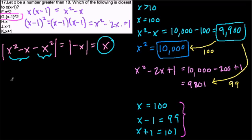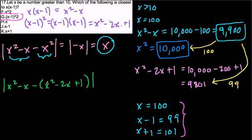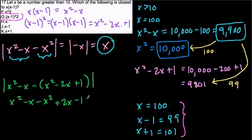What about G? We take the original, x squared minus x, and subtract x squared minus 2x plus 1. Distributing the subtraction: x squared minus x, subtract x squared gives 0, subtracting negative 2x gives positive 2x, and then minus 1. So inside the absolute value we have x squared minus x squared, which is 0, then negative x plus 2x, which is x, and then minus 1 — giving the absolute value of x minus 1.